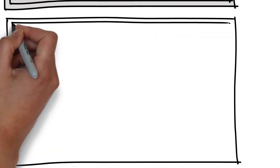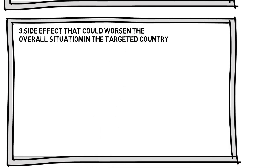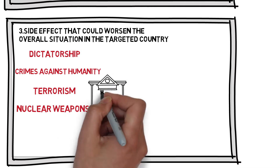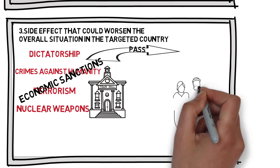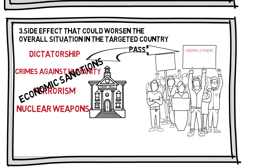Third, economic sanctions can have a dramatic side effect that could worsen the overall situation in the targeted country. Dictatorship, crimes against humanity, terrorism, and the development of nuclear weapons are among the main reasons for economic sanctions, with the political errors of the ruling government leading to international sanctions. In reality, however, economic sanctions are more likely to pass the pain on to innocent citizens in the targeted countries, resulting in factory closures, rising unemployment, sharp reductions in investment, high prices, and shortages of food and vital medicines.